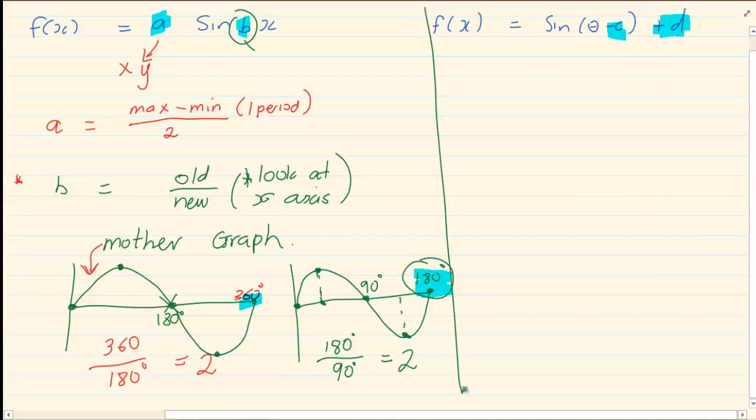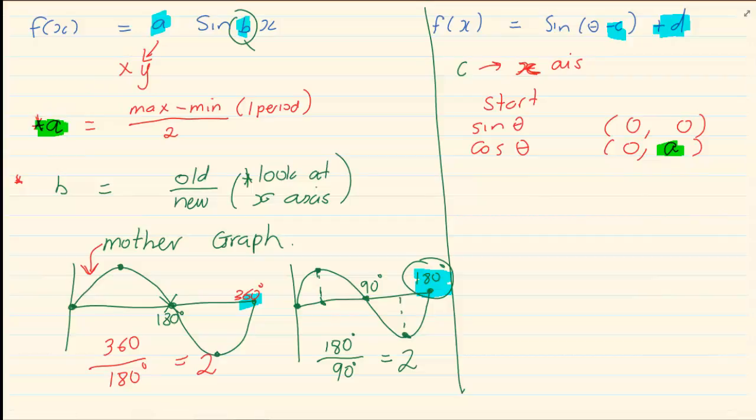Let's take now the adjustment with C and D. When we are working with C, C means that the graph has shifted right or left. We are working specifically with the x value. We need to know what are the starting points. The starting point of a sin graph is 0 and 0. The starting point of a cos graph is 0 and A. And the starting point of a tan graph is 0 and 0.